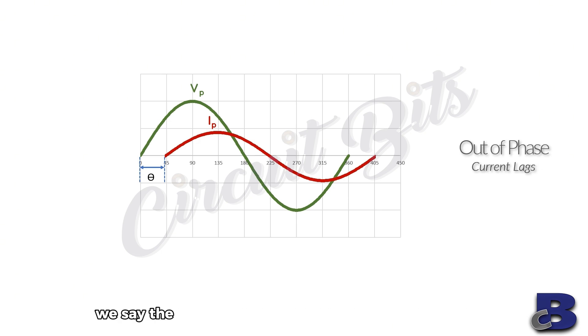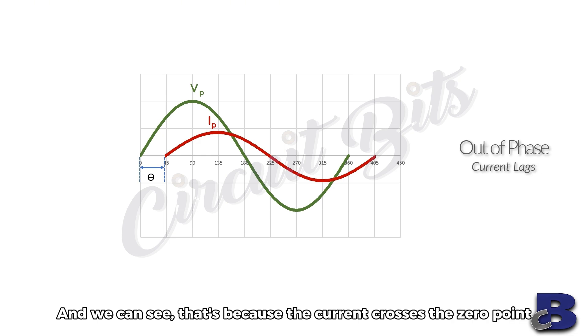In this case, we say the current lags the voltage by the angle theta, which happens to be approximately 45 degrees. And we can see that's because the current crosses the zero point